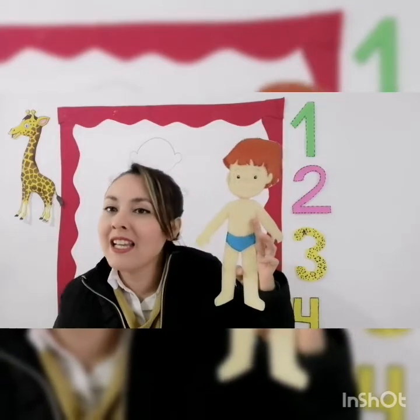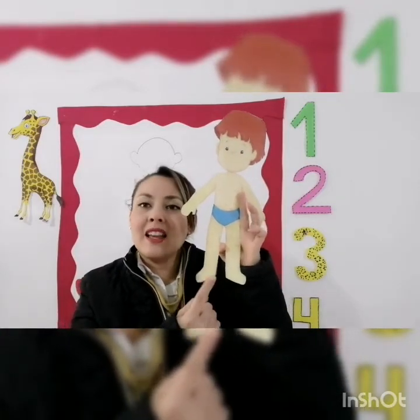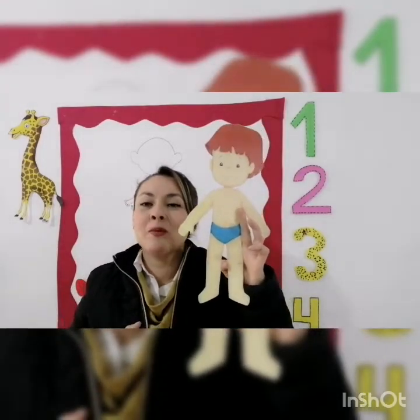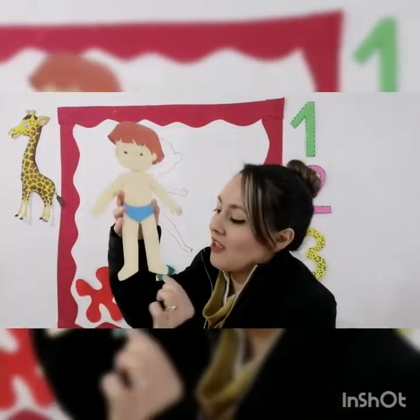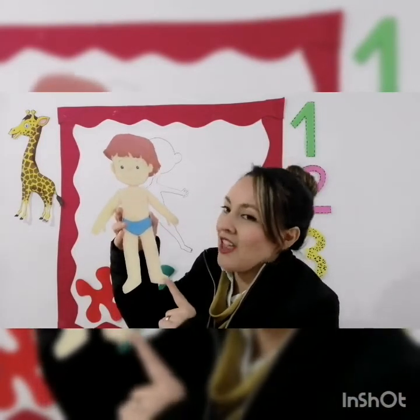¿Y cuántos pies tenemos? In English, one or two. Two. Very good. One and two — two feet, dos pies. Digan conmigo: feet. Excellent. Very good. ¿Y cómo se dicen los dedos de los pies? Dedos de los pies se dice toes. Toes. Very good. Digan conmigo nuevamente: toes. Muy bien, mis niños. Los felicito.